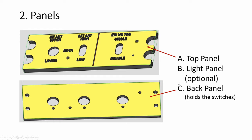The middle part, if you want to do backlighting, is a light panel which is normally translucent to spread the light — this is totally optional. You can collapse all of this into one piece without the back panel and without the light panel.